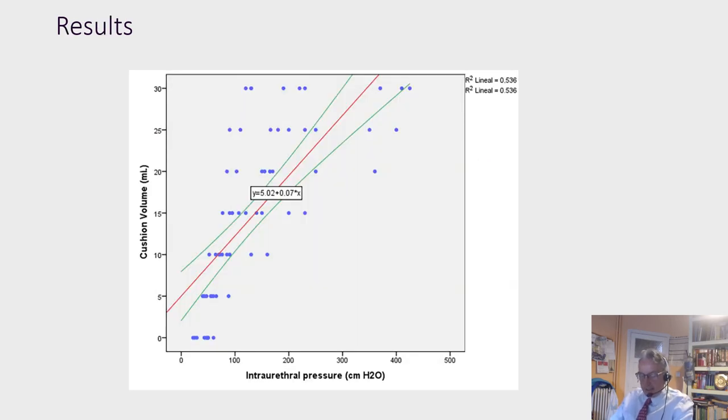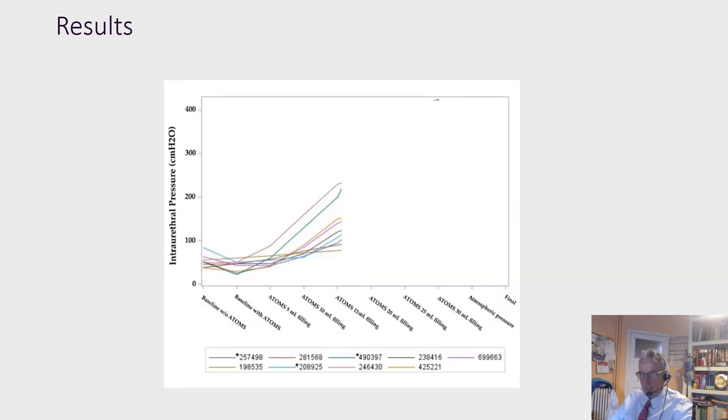The regression analysis showed a significant direct relationship between cushion volume and intraurethral pressure. It was also observed that intraurethral pressure rises scarcely and uniformly with filling under 15 milliliters,